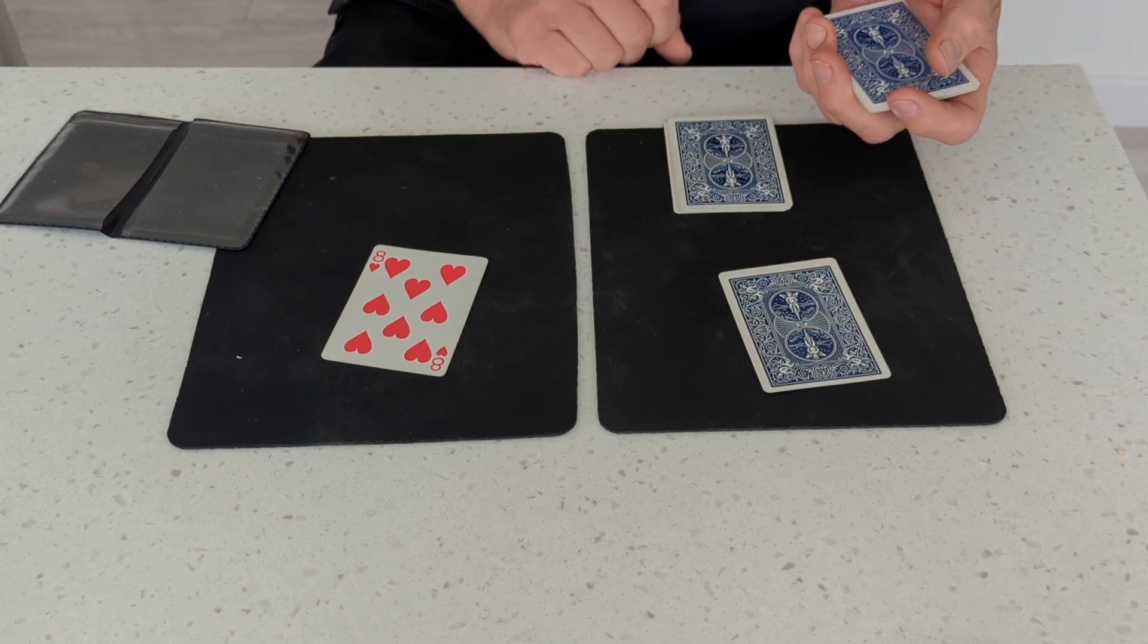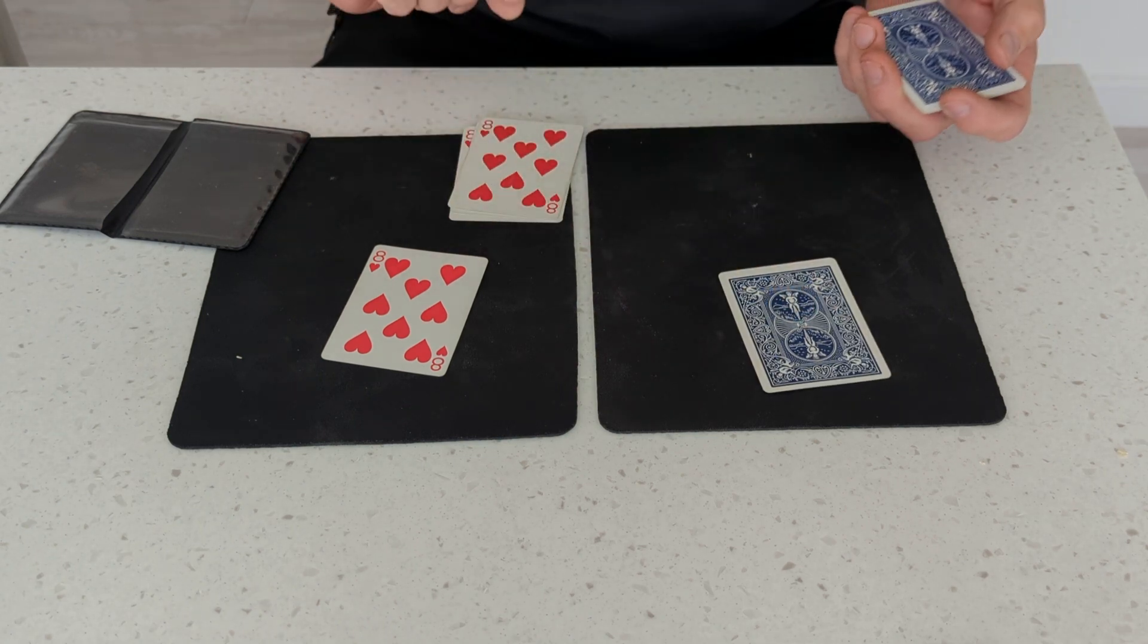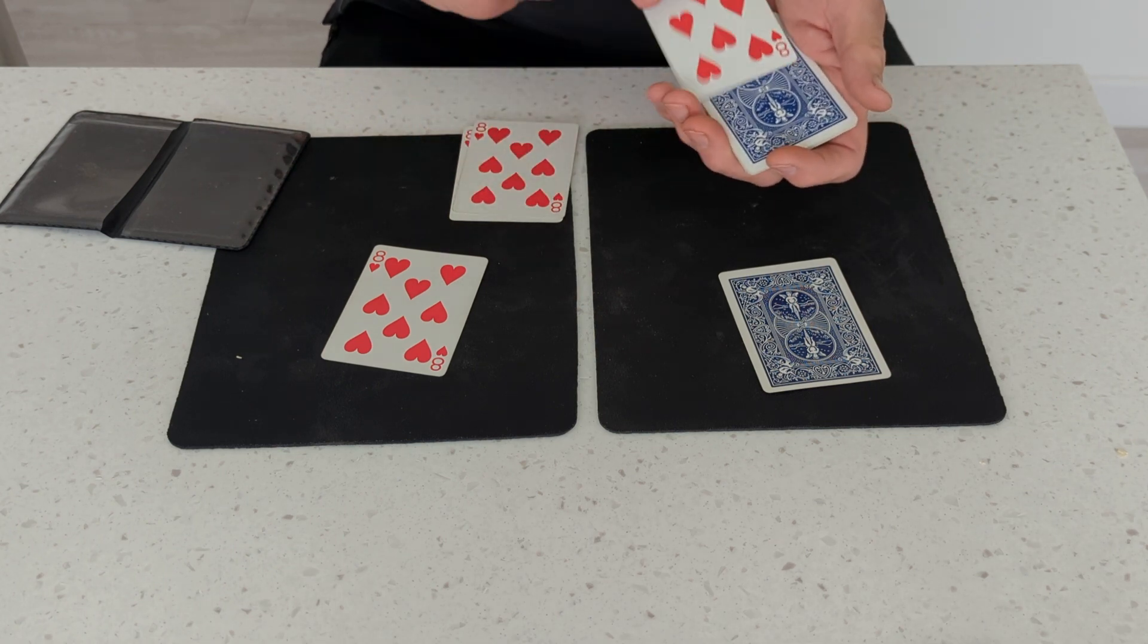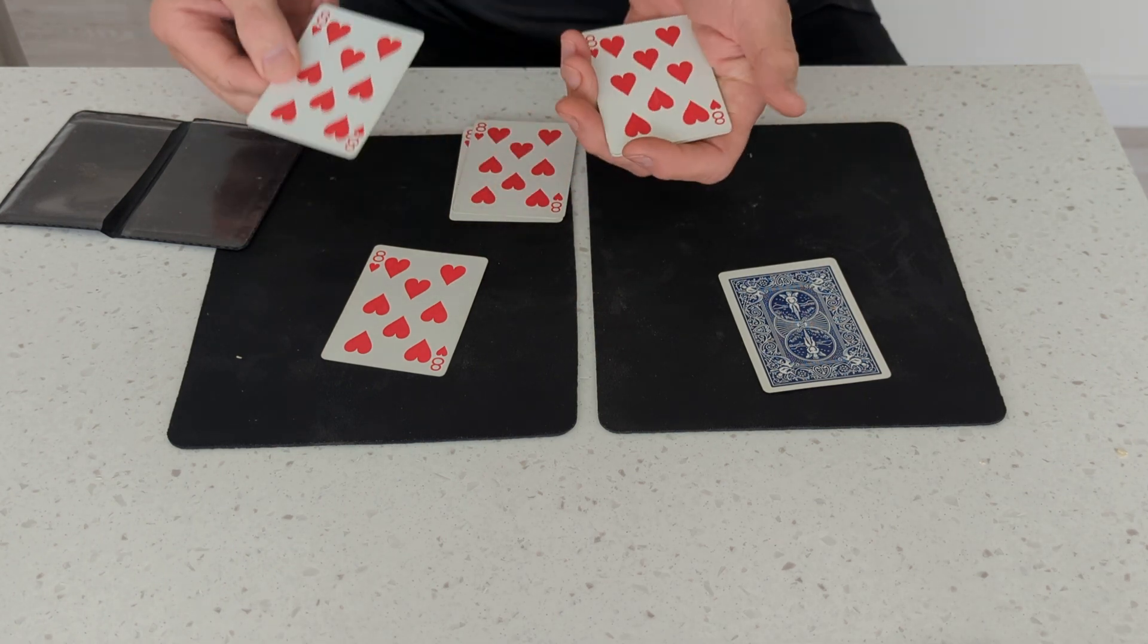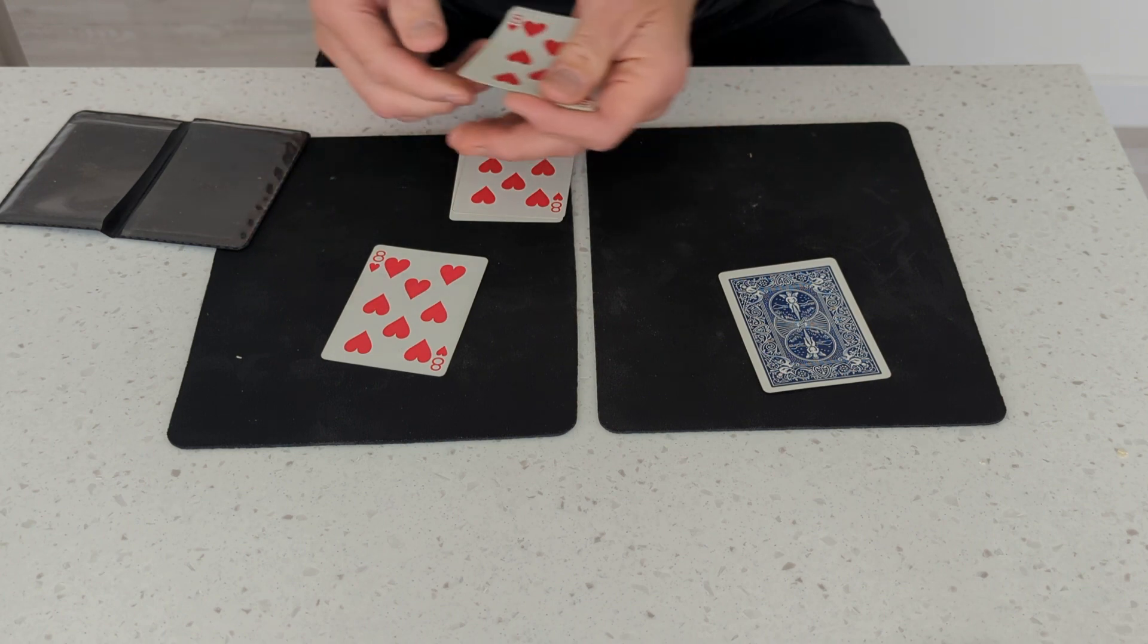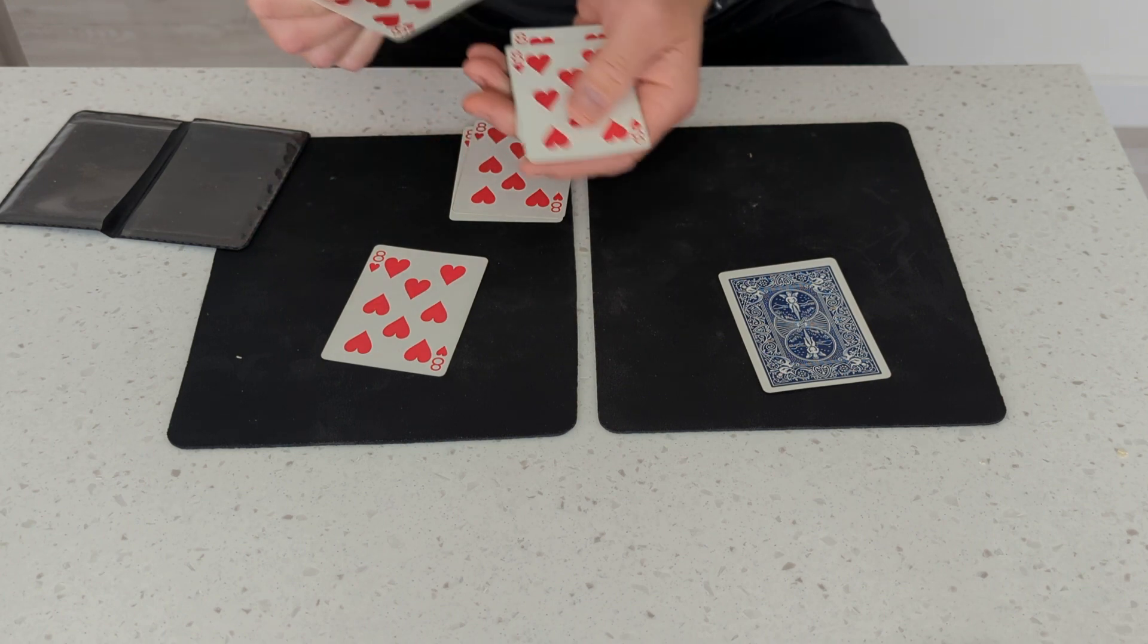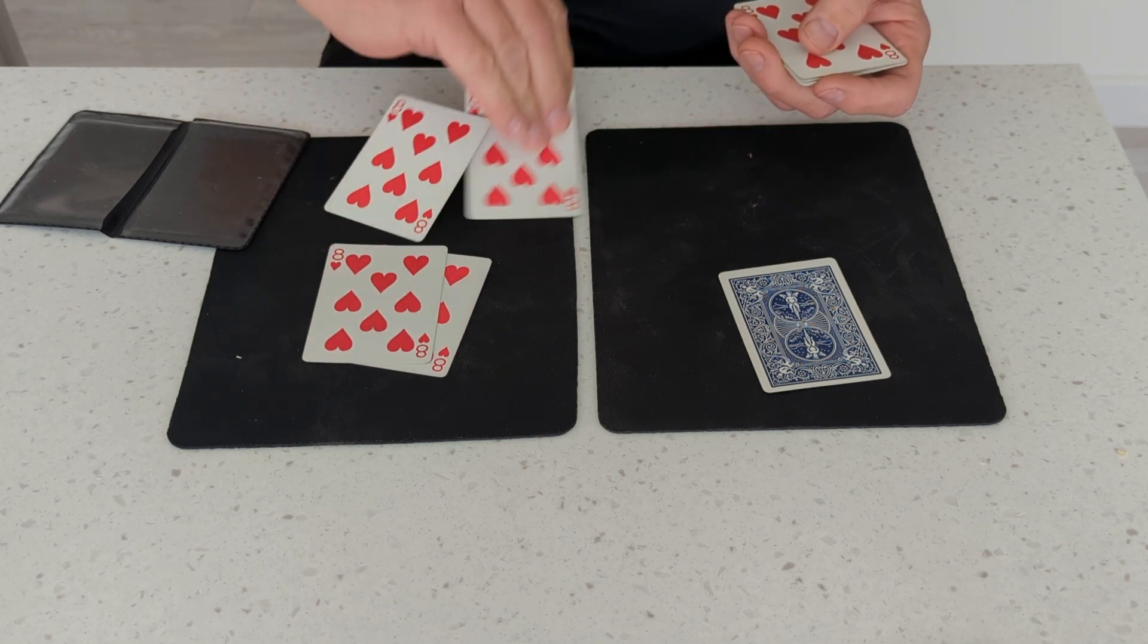So that will be our face down side. Let's try this with the face up side. Again, you just wave the cards there, and that one turns face up. And if you keep waving there, they all turn face up. So that's our face up side there.